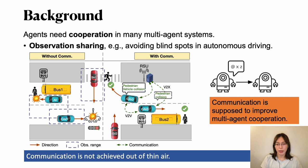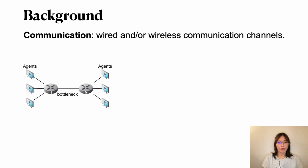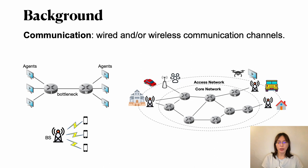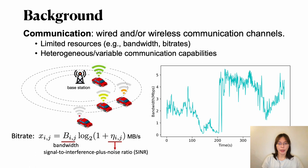However, let's think deeper. Communication is not achieved out of thin air. Agents' communication is achieved via wired, wireless, or hybrid communication channels. No matter which way, they have similar features, such as agents sharing limited resources like bandwidth and bitrates. Next, agents' communication capacities, such as bitrate, are heterogeneous among agents and vary over time. For example, the vehicle's bitrate will decrease with the distance between base stations.